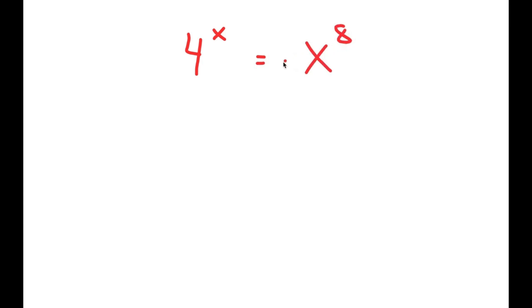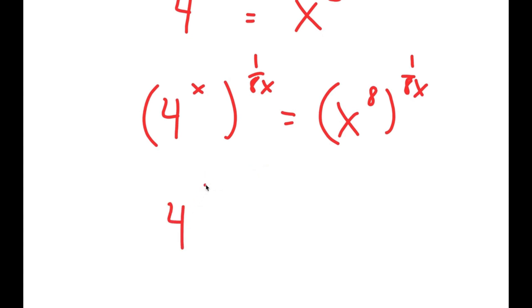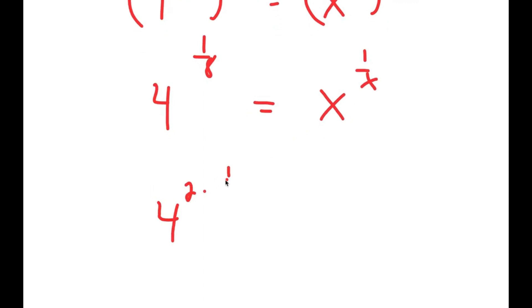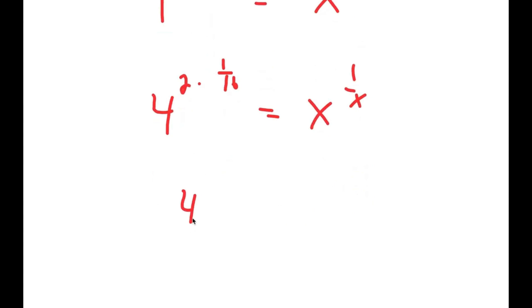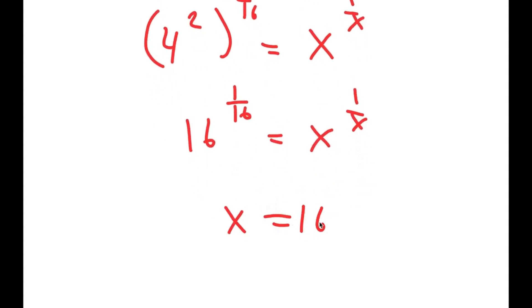In this problem, I'm going to solve the equation 4 to the power of x is equal to x to the power of 8. To solve this, I take the power of 1 over 8x on both sides. I get 4 to the power of 1 over 8 is equal to x to the power of 1 over 2 times 1 over 16. This is the same as 4 to the power of 2 times 1 over 16, which I rewrite as 4 squared to the power of 1 over 16. Since 4 squared is 16, I get 16 to the power of 1 over 16 equals x to the power of 1 over x, meaning x equals 16.